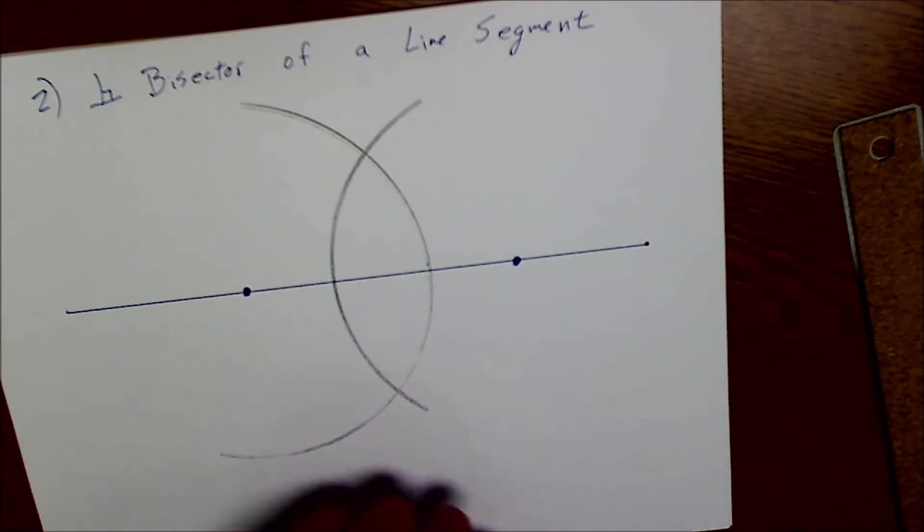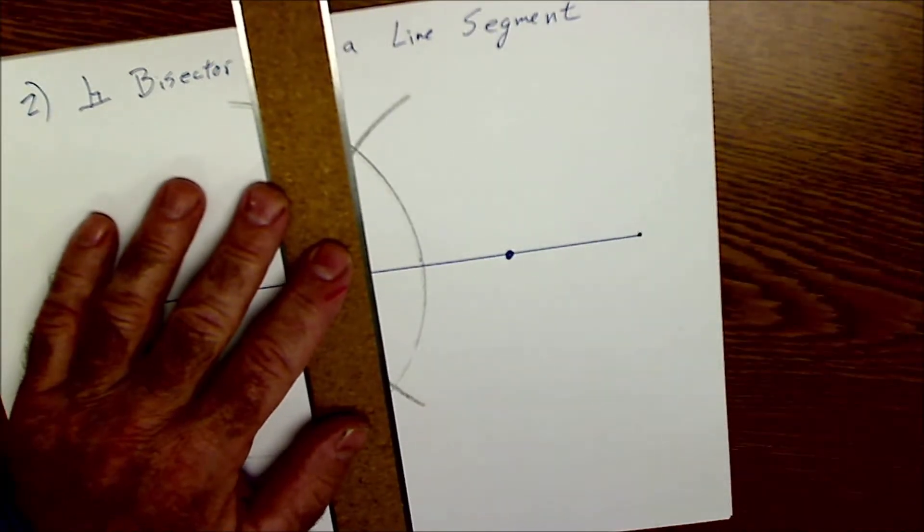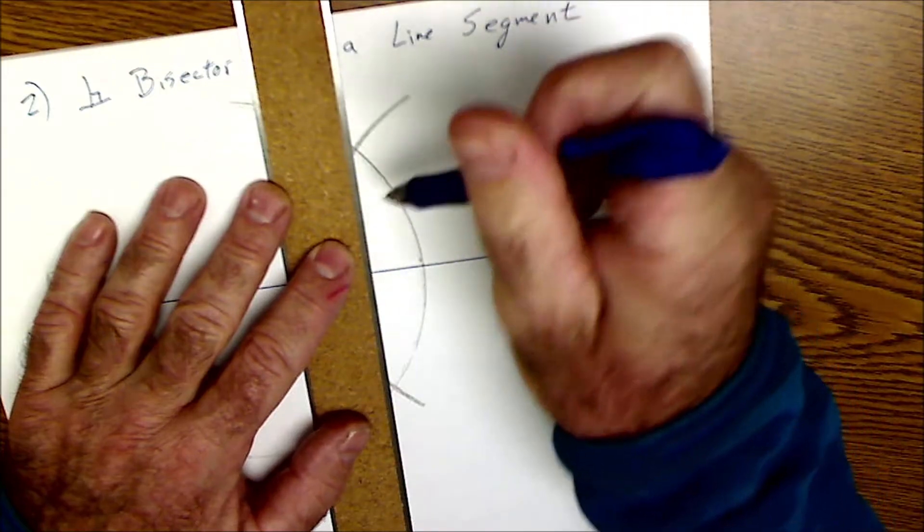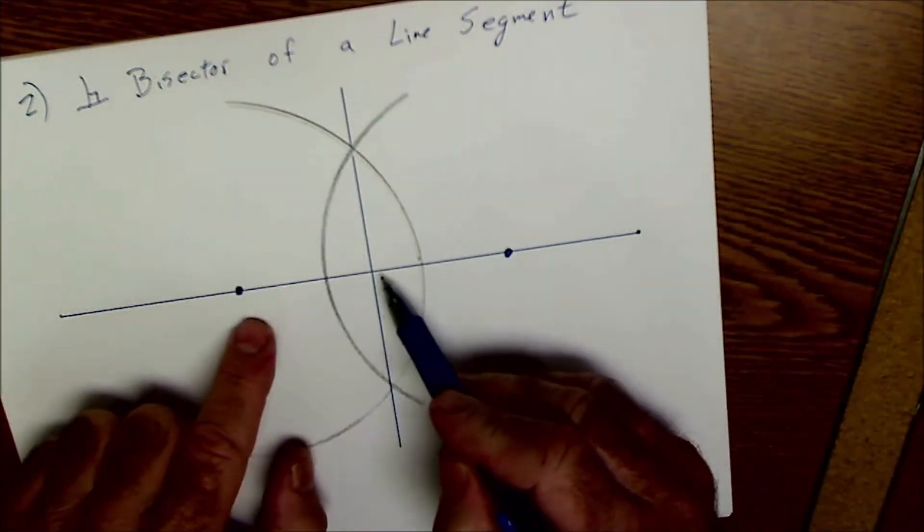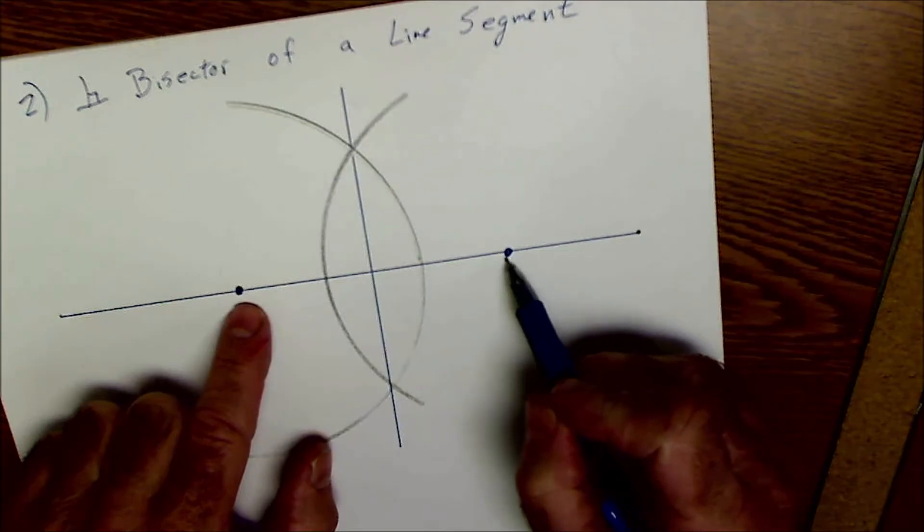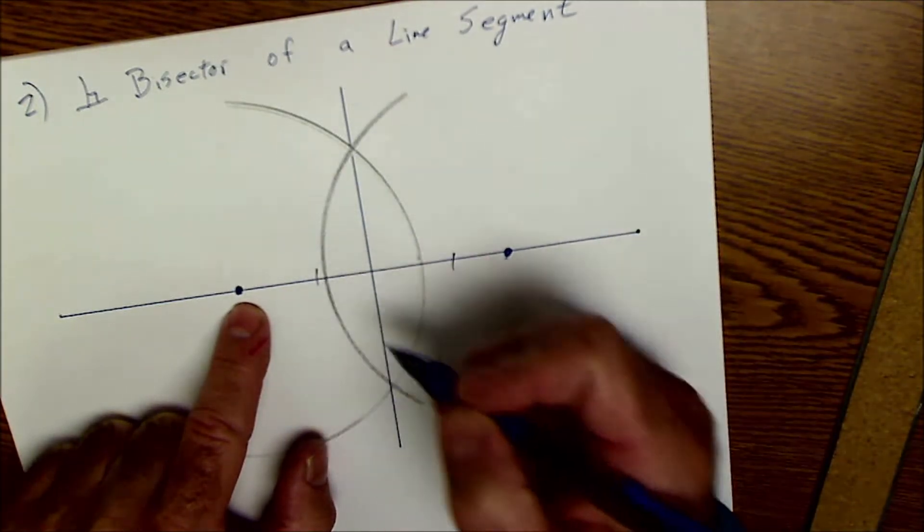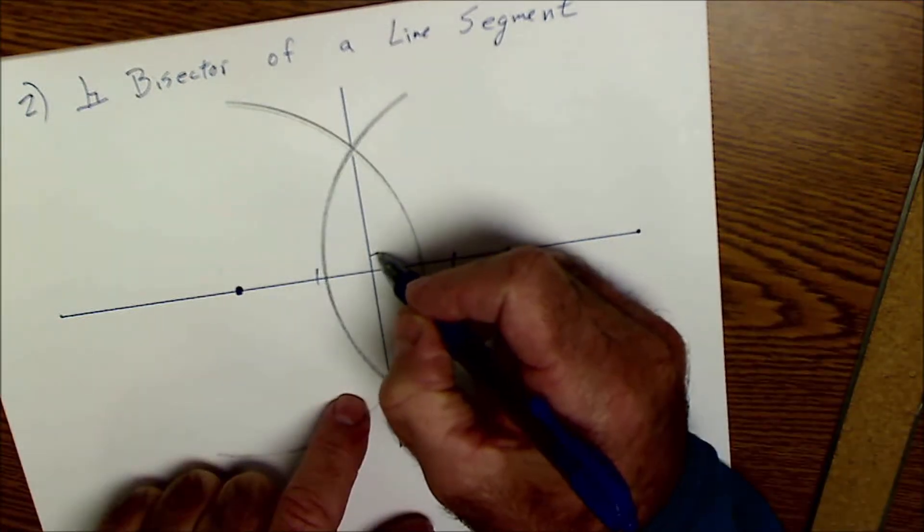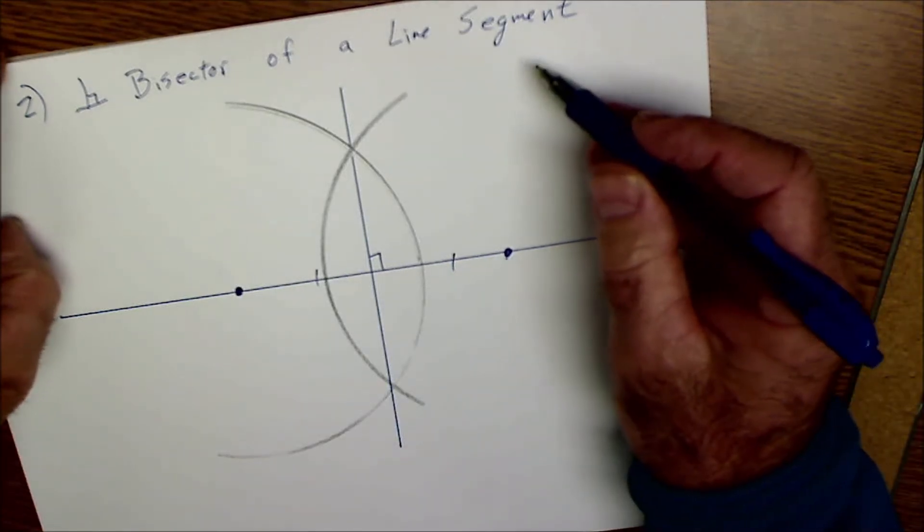And I do the same thing from the other end of the line segment. And then where those points intersect, I use my straight edge and I connect those points of intersection. And this point right here is exactly in the middle of these two points. That's what makes it a bisector. That's congruent to that. And it's perpendicular as well. So that's a perpendicular bisector of a line segment.